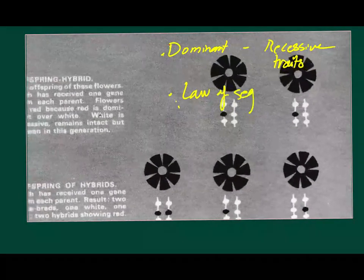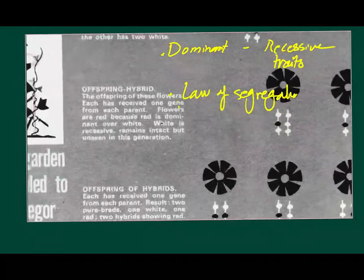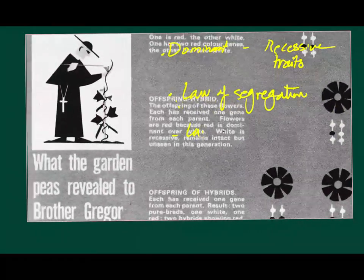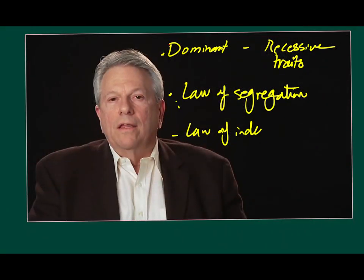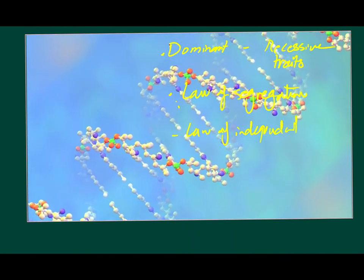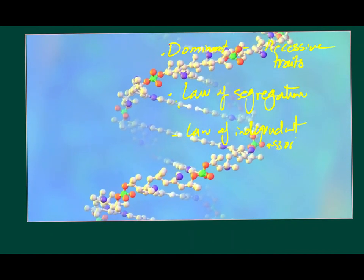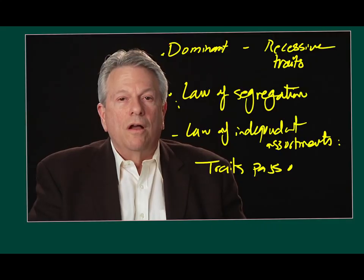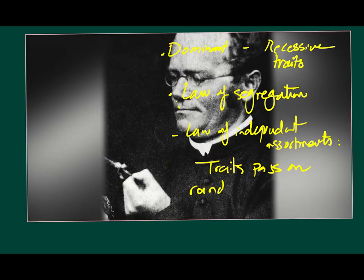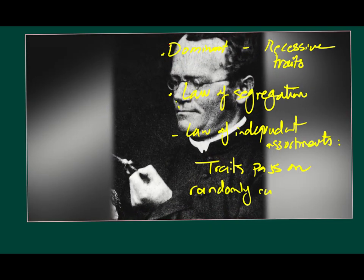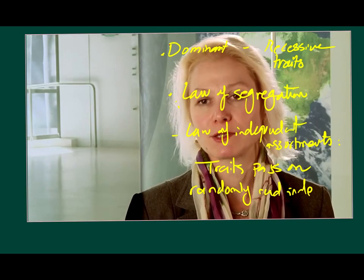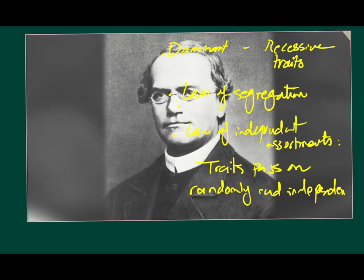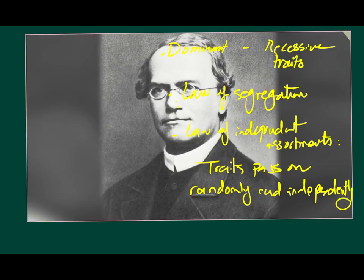Mendel also formulated the law of independent assortment. The law of independent assortment addressed the fact that there are a large number of traits. These traits are passed on randomly and are independent of the other traits and of the traits of the two different parents. The ability to explain hereditary diseases and to engineer plants with desired properties are all consequences of the fundamental theory founded by Mendel.